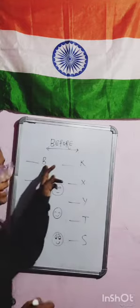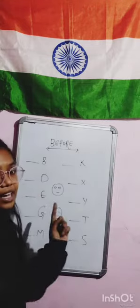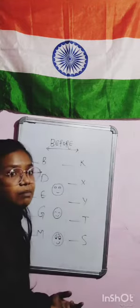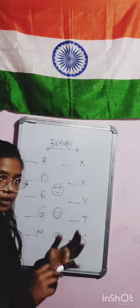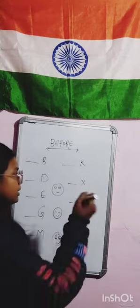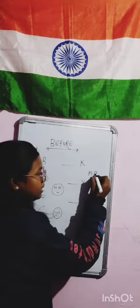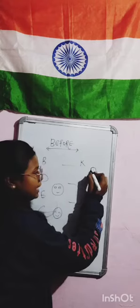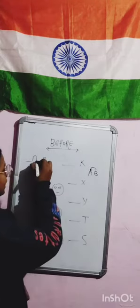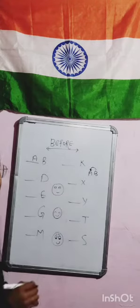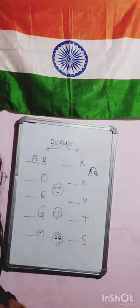A-B-C-D — we will see what A-B-C-D is. What is A for Apple? What is D for Dog?